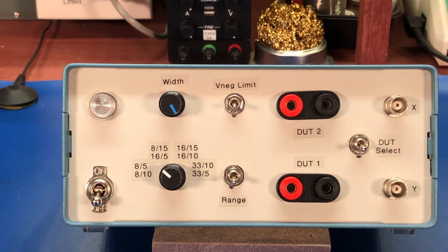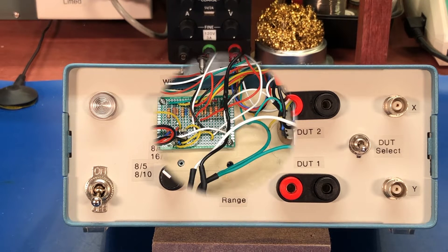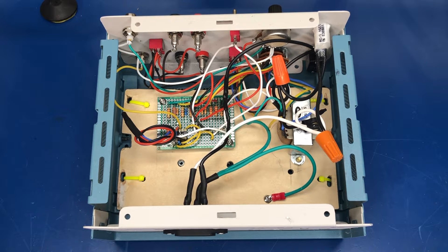So let's take a look inside of it so you can see how I put it together and then after that we'll hook it up to an oscilloscope and test a few components out on it so you can see it working. All right, so this is the inside of the curve tracer.